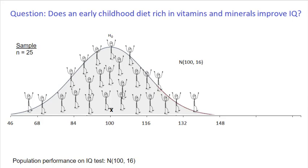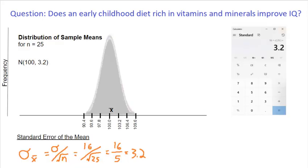But should we go celebrate, or should we consider the possibility that this could just be random error? That is, every time we sample 25 people from the population, even if our treatment has no impact at all, sometimes the sample mean will be above average, sometimes it will be below average. Very rarely would it fall exactly on 100.